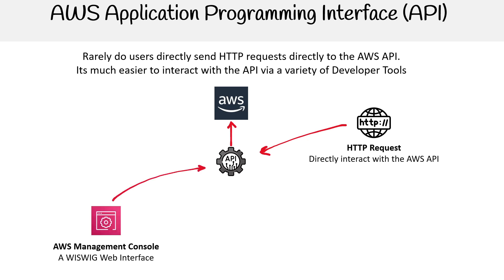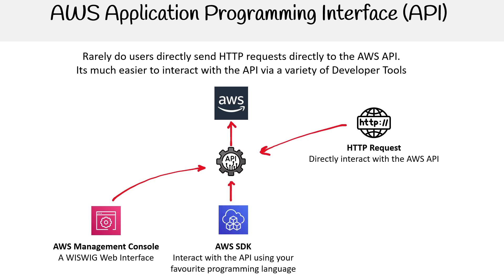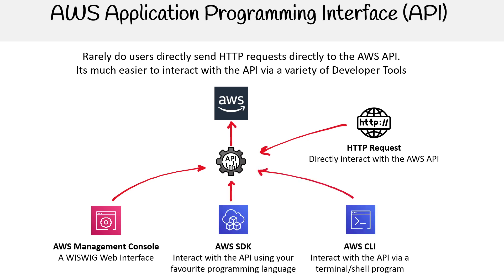AWS has other methods to interact with the API. The first and primary way is through the AWS Management Console — that WYSIWYG web interface where you do click-ops. The other two ways are the SDK, where you use your favorite programming language, and the CLI, where you use a shell program that you can pass flags to and get information back really quickly.